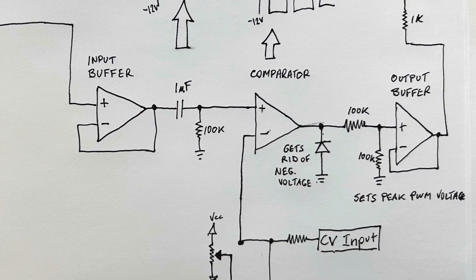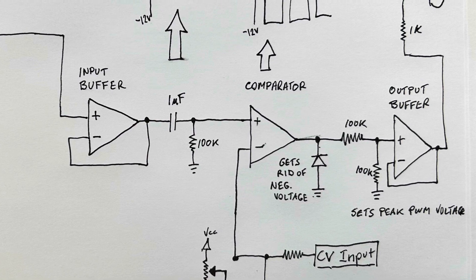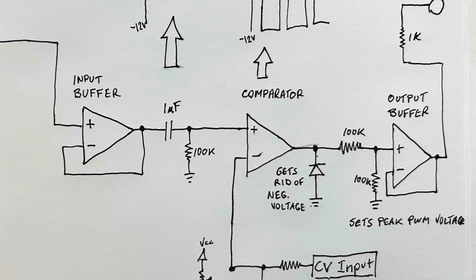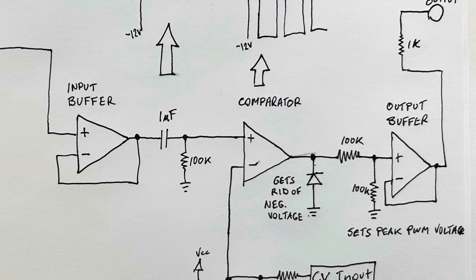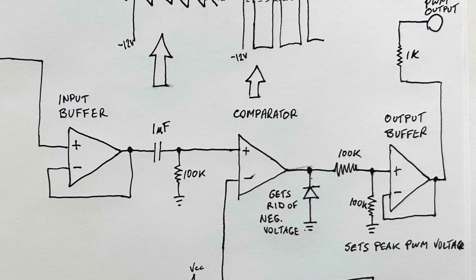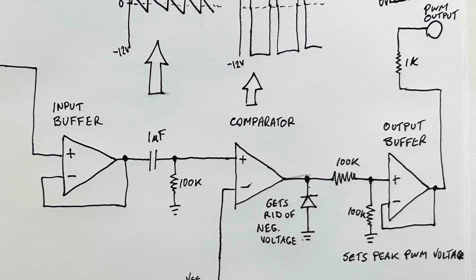Then I put it through another voltage divider to set up the peak voltage to whatever I want, in this case around 9 volts. And then the output of that gets buffered and sent out as the PWM signal.